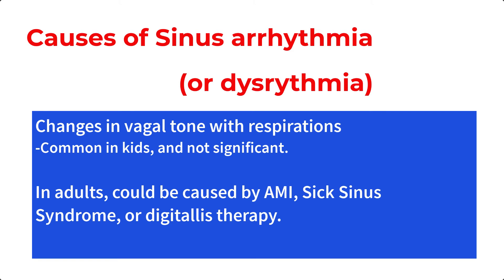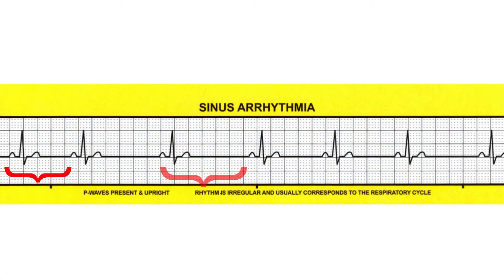In adults, however, this could be an indication of something more serious, such as an anterior wall MI, sick sinus syndrome — which is a disease process that disrupts normal SA node function — or a response to digitalis therapy. We identify a sinus dysrhythmia by noticing variations in the P-to-P intervals and the corresponding R-to-R intervals as well.